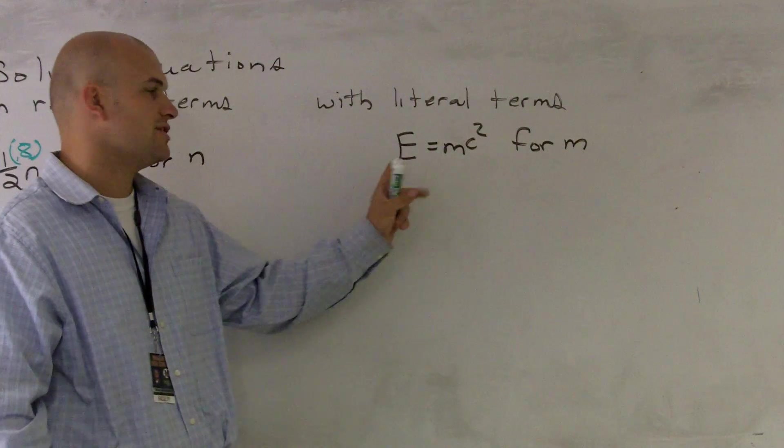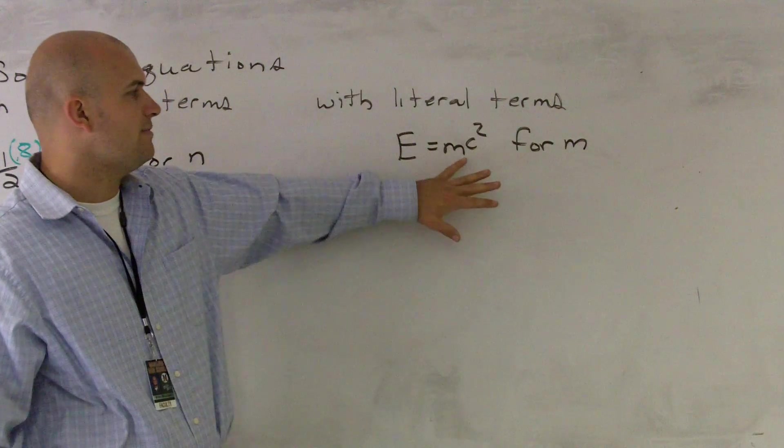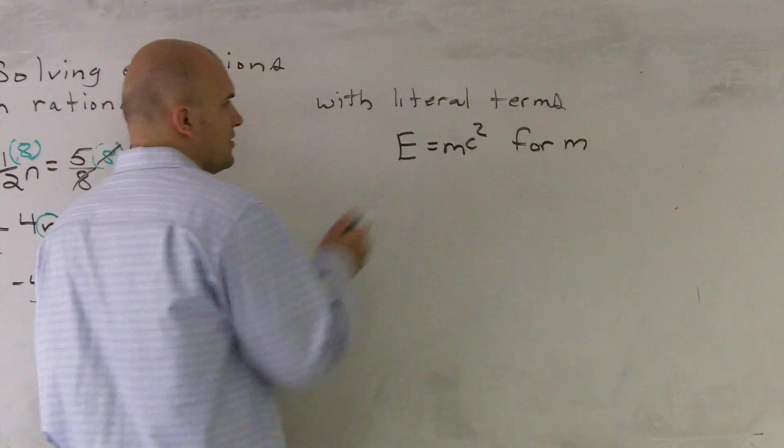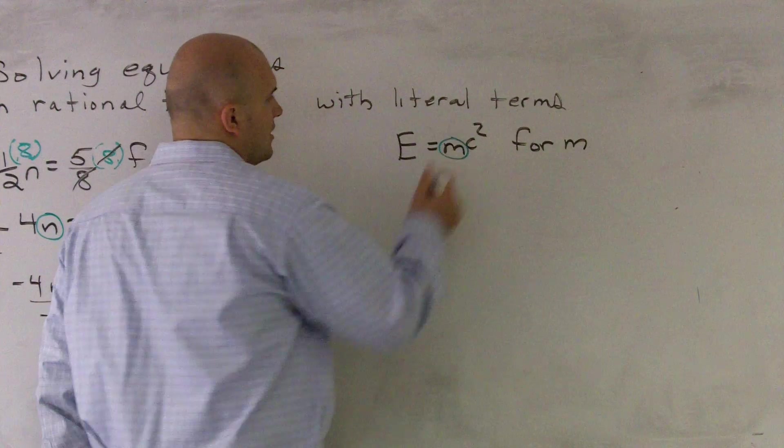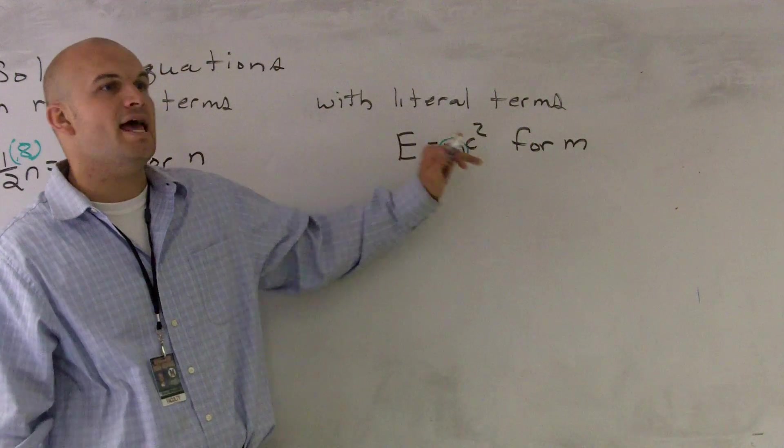What you notice is we have three terms: we have an E, we have an m, and we have a c squared. So what we need to do when we're trying to solve for m—I'm going to circle my m to show you—we need to get that m by itself.